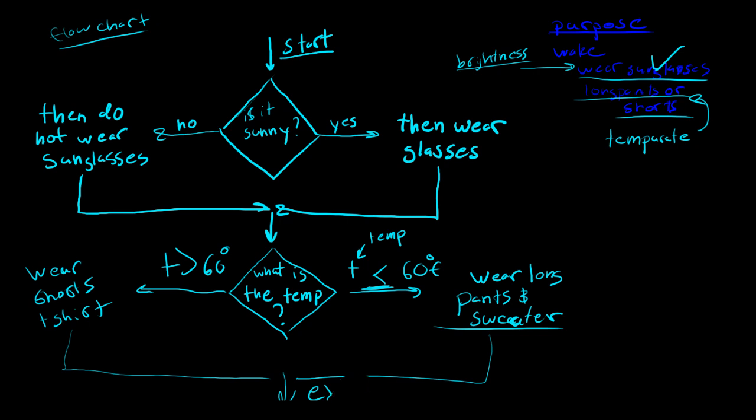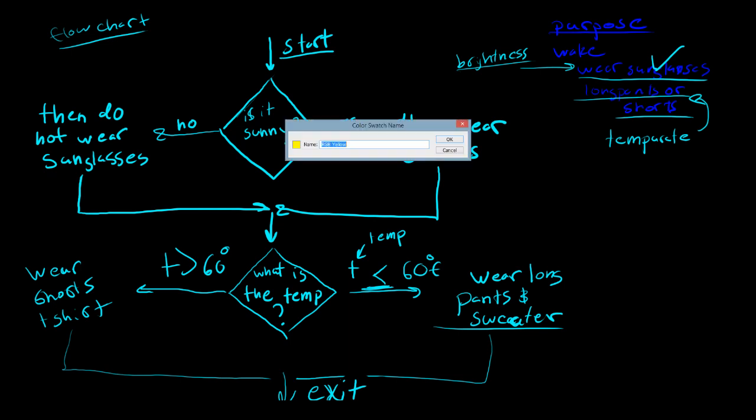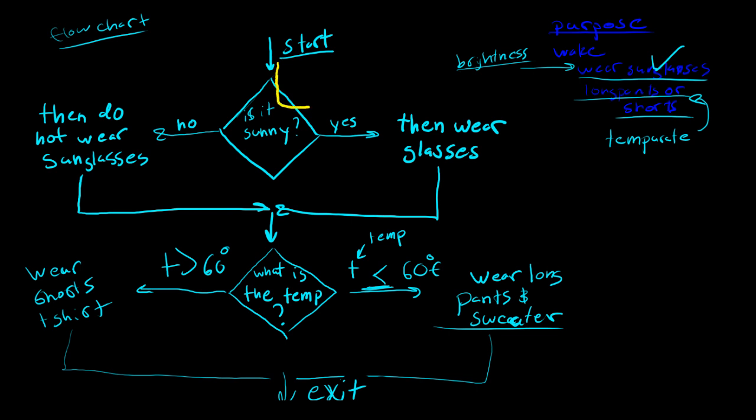So there's a couple, we'll actually like go through this algorithm and see how it's used. So we'll start at the top now that we've written it. Yeah, that's a good color. So we'll start at the top. And, is it sunny today? Well, let's just say that since we're using yellow, it is sunny. So now we need to wear our sunglasses. And then we'll come back around, back to the center. Then we'll ask, hey, what's the temperature outside? And it's really cold, it's the middle of winter, just snowed, so you need to wear long pants and a sweater. And we're done. So that's one possible path for the algorithm.